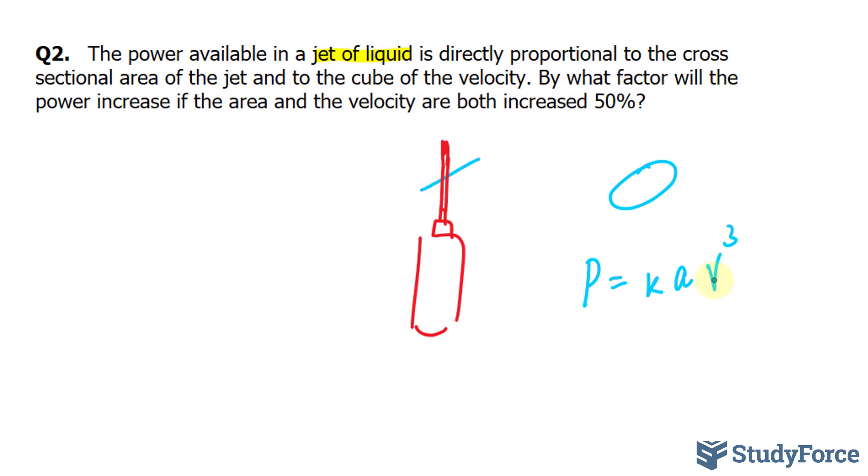They're saying by what factor will the power increase if the area and velocity are increased by 50%. So area has been increased by 50%, we represent that as 1.5 of the original A, and V equals 1.5 of the original V.